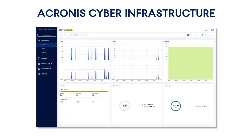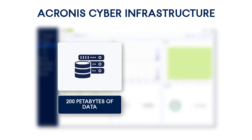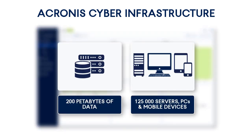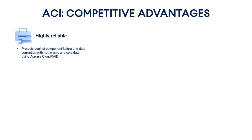Deployed at Acronis data centers worldwide, Acronis Cyber Infrastructure stores more than 200 petabytes of data that's been backed up from more than 125,000 servers, PCs, and mobile devices. What makes it such an efficient and secure solution? First, it's highly reliable. The Acronis Cyber Infrastructure protects against component failures and data corruption with hot, warm, and cold data using the patented technology called Acronis Cloud RAID. Moreover, it eliminates service downtime while rolling out upgrades for system software.